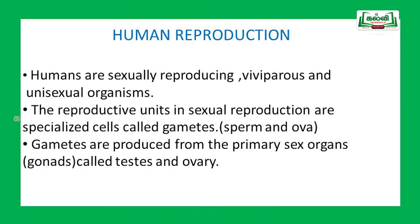Humans are sexually reproducing, viviparous, and unisexual organisms. Viviparous means they give birth to young ones. Unisexual means sexes are separate — the male individual is separate and the female individual is separate. In humans, the reproductive units in sexual reproduction are specialized cells called gametes, that means sperm and ova. These gametes are produced from the primary sex organs called testis and ovary, which are also called gonads.